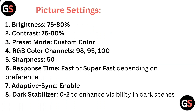Picture Settings: Brightness 75-80%, Contrast 75-80%, Preset Mode Custom, Color RGB Color Channels 98-9500, Sharpness 50, Response Time Fast or Superfast depending on preference, Adaptive Sync enabled, Dark Stabilizer 0-2 to enhance visibility in dark scenes.